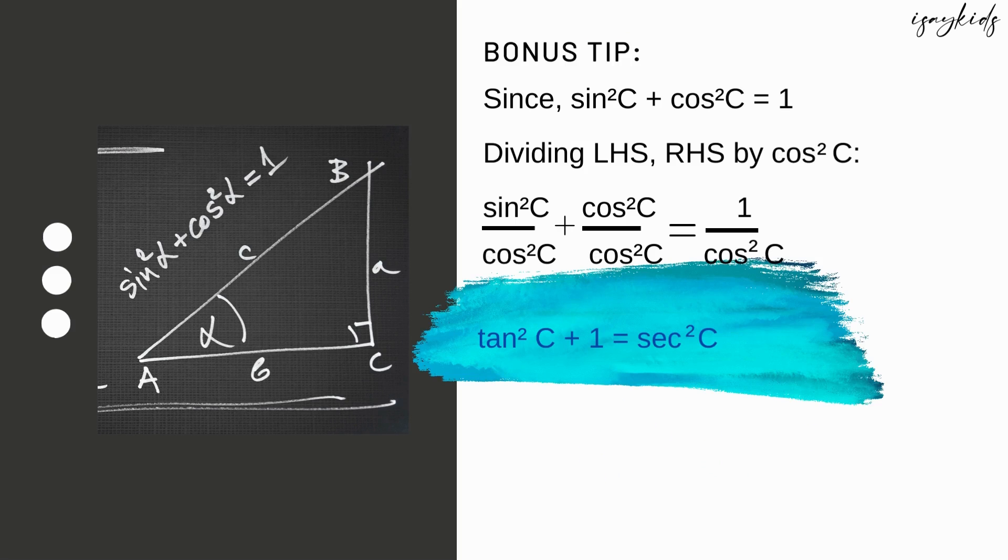Moving on to the third one. In a similar way, dividing left hand side and right hand side by cos²C, we get sin²C/cos²C + cos²C/cos²C = 1/cos²C. Hence, 1 + tan²C = sec²C.